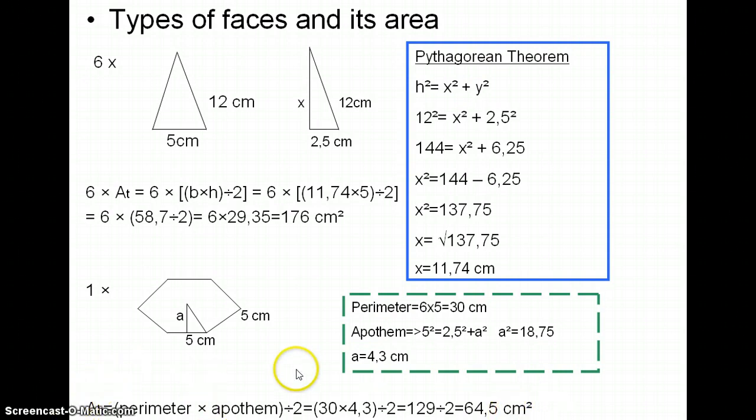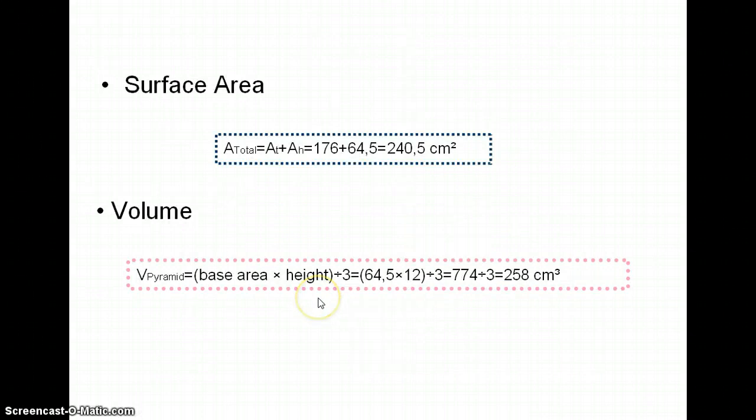So this area will help us to discover the volume. So now the difficult part is finally over. Now let's concentrate on the surface area and volume. So the total area equals the sum of the triangular area and the hexagonal area.